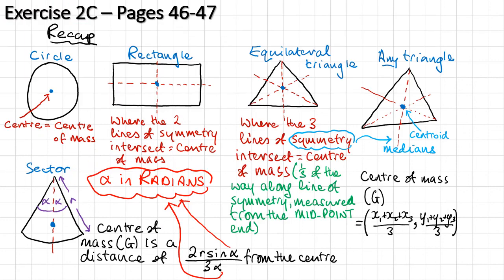You should now be able to do exercise 2C on pages 46 to 47 of the textbook. All the standard results are shown here — and as a reminder, when working with a sector, the angle alpha must be in radians.